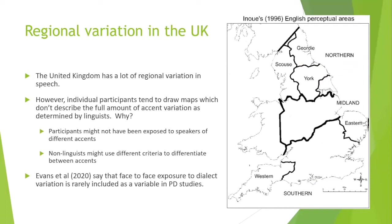In perceptual dialectology, you give someone a blank map with nothing about dialects and ask them to draw what they think the dialect areas are. You add all the maps together, and if enough people agree the Irish accent is a certain way, there's some truth in it - even if Irish speakers themselves aren't aware of it. A rough composite map from Britain shows areas like Geordie around Newcastle, Scouse around Liverpool, Yorkshire, the Midlands, the Southern area, and the Western. Exposure matters: if you haven't spent time in Western England, you can't distinguish a Cornwall accent from a Devon one. Your ear gets attuned with face-to-face exposure.